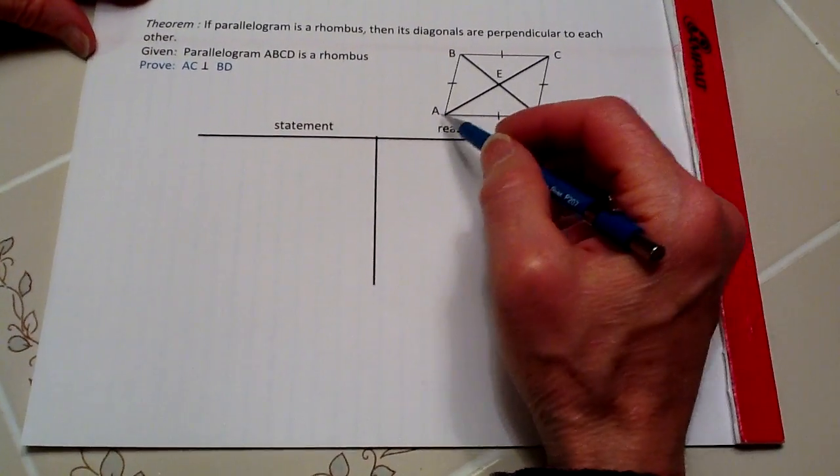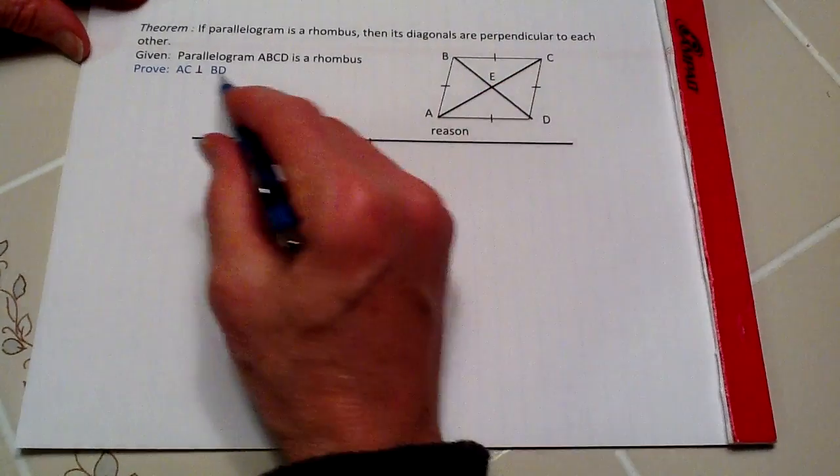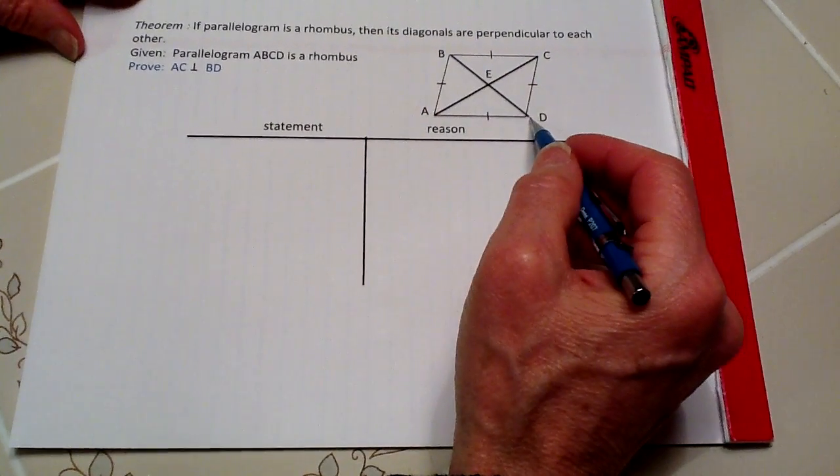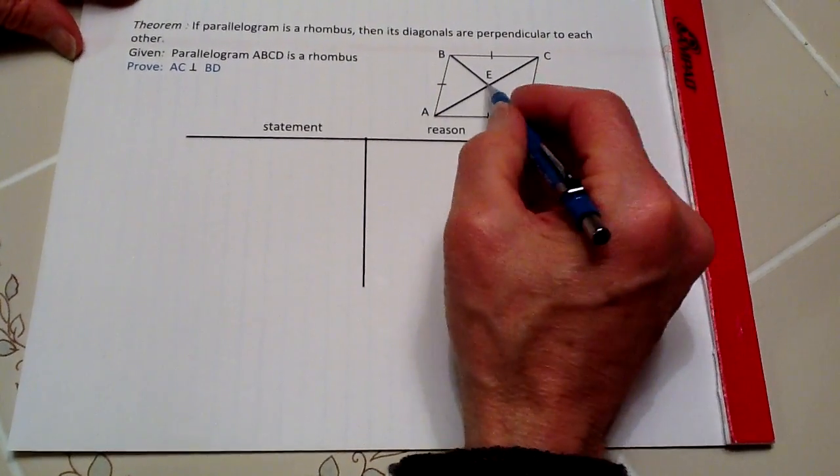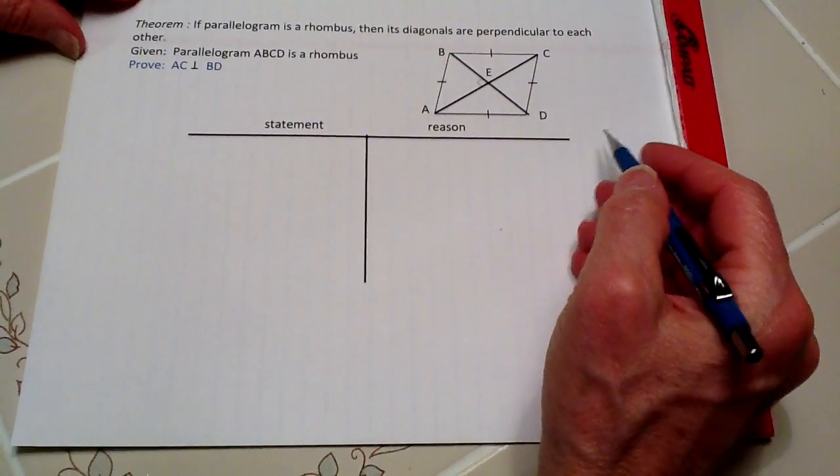This is our given, and what we're trying to prove is that the diagonals AC is perpendicular to BD. In other words, do we have a right angle up here? That's what we're going to try to find out.